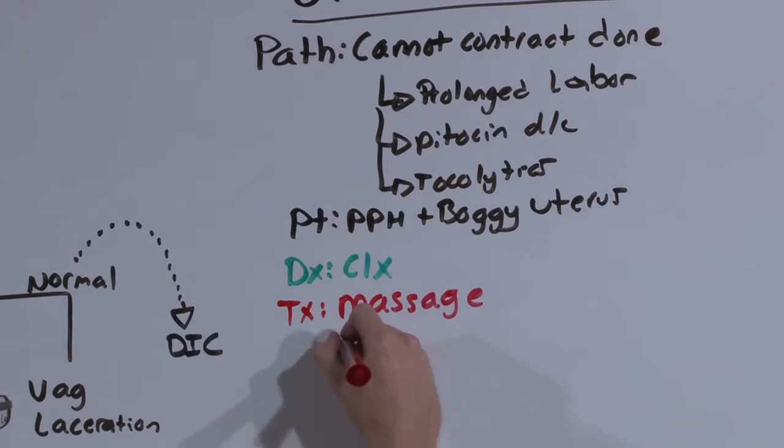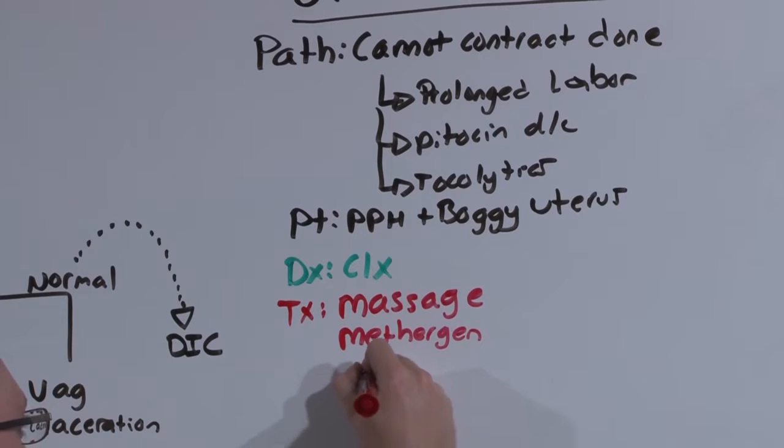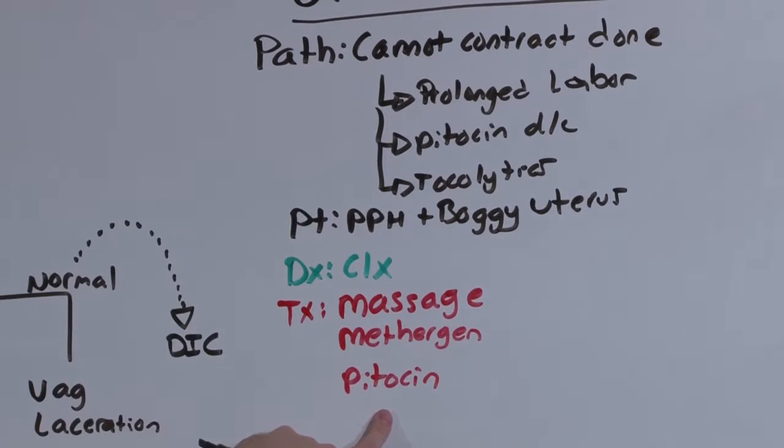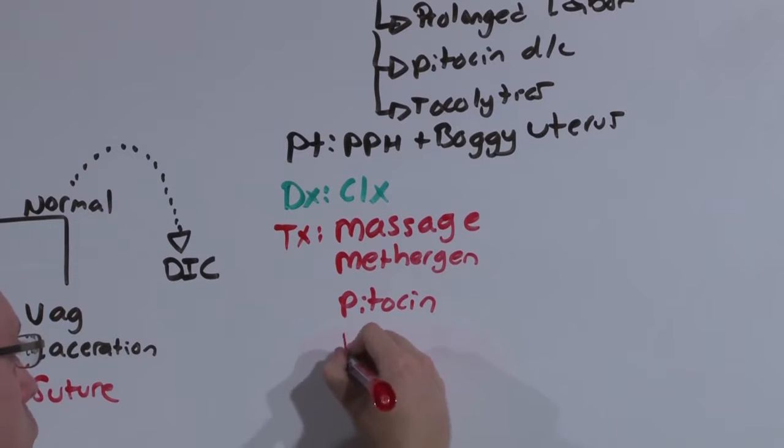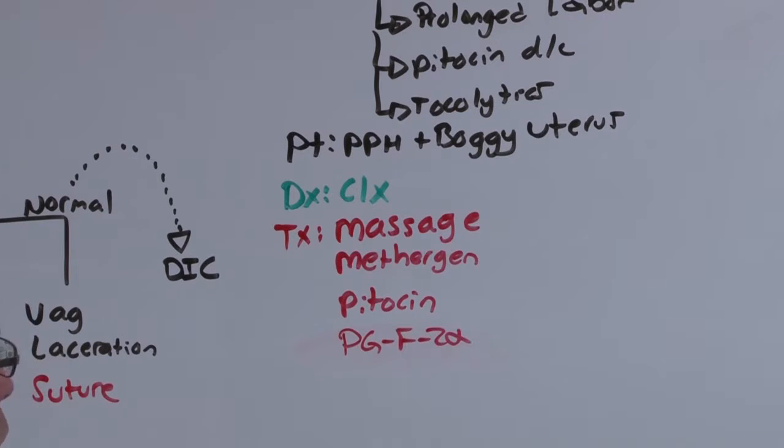If that fails, you can use methargen or Pitocin. Especially if you had the Pitocin going during delivery and all of a sudden you turned it off, turn it back on. For those of you going for 270, know about PGF2-alpha, Hemabate, a way you can turn off bleeding postpartum.